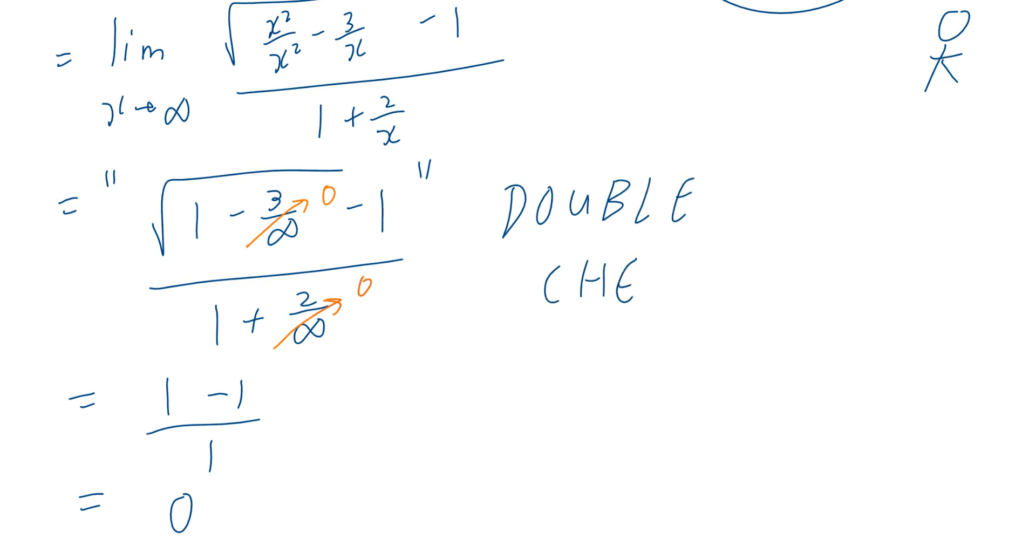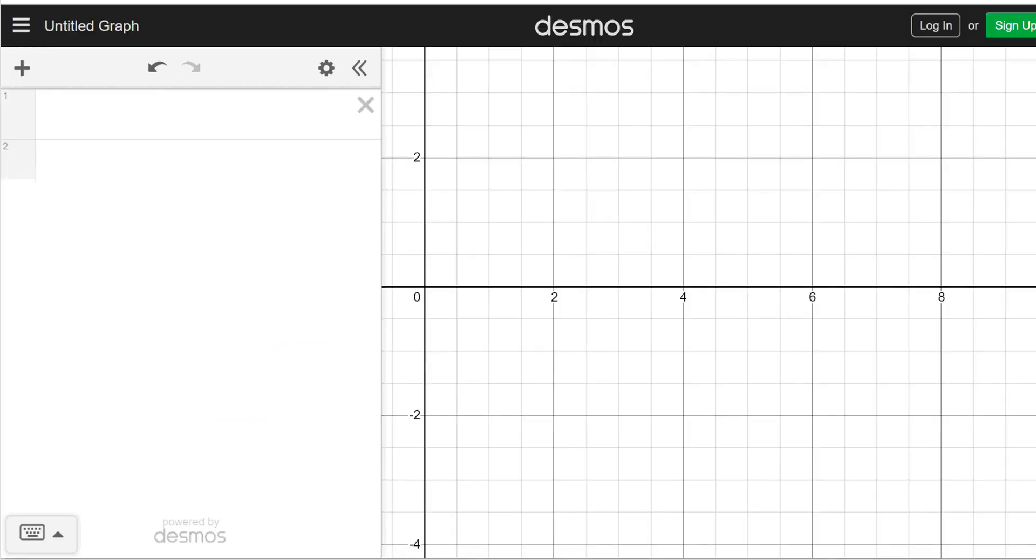One is you can manually graph this, and by verifying the graph relative to y equal to 0, you can double-check your answer. The faster approach is you can go straight to Desmos, and we can graph this exact function.